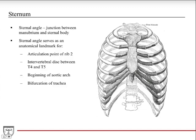The sternal angle is also the point where the trachea bifurcates. If you have your trachea coming down, this is where it splits off into the main primary bronchi. When thinking about these structures in various lectures or when studying, keep this anatomical landmark in mind, because it's a junction point where a lot of different structures form or pass. Very important.